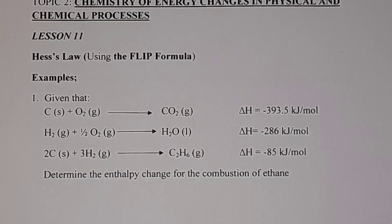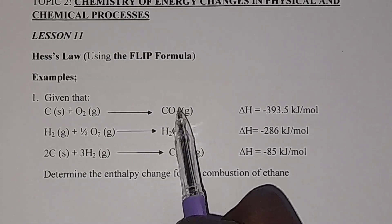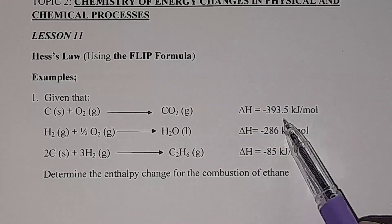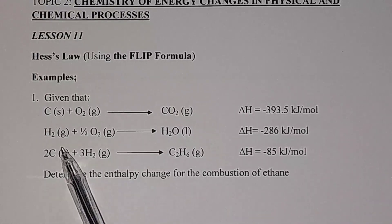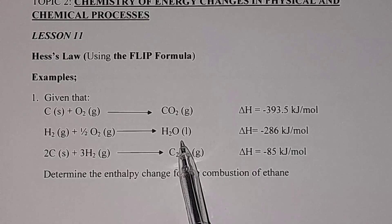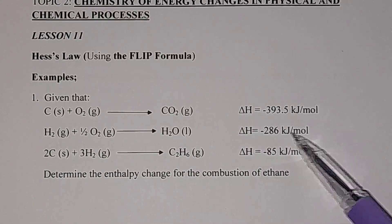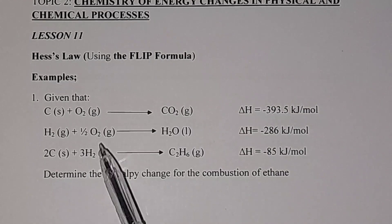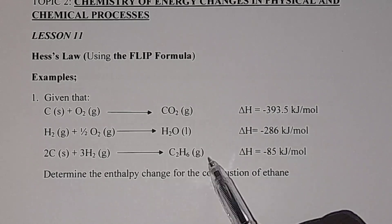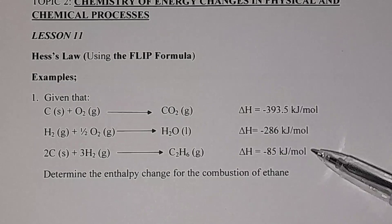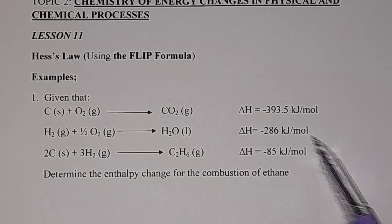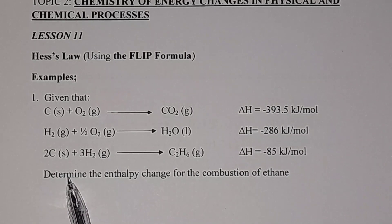Example 1: given that we have carbon reacting with oxygen giving us carbon dioxide — this is the standard enthalpy of combustion of carbon, which is negative 393.5 kJ per mole. Here we have hydrogen reacting with half a mole of oxygen giving us one mole of water — this is the standard enthalpy of combustion of hydrogen gas. And here we have 2 moles of carbon reacting with 3 moles of hydrogen gas giving us 1 mole of ethane gas — this is the standard enthalpy of formation of ethane gas. The question asks us to determine the enthalpy change for the combustion of ethane.